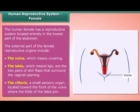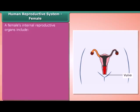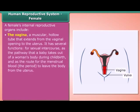The clitoris is a small sensory organ located toward the front of the vulva where the folds of the labia join. A female's internal reproductive organs include the vagina, a muscular hollow tube that extends from the vaginal opening to the uterus. It serves several functions: for sexual intercourse, as the pathway that a baby takes out of a woman's body during childbirth, and as the route for menstrual blood to leave the body from the uterus.